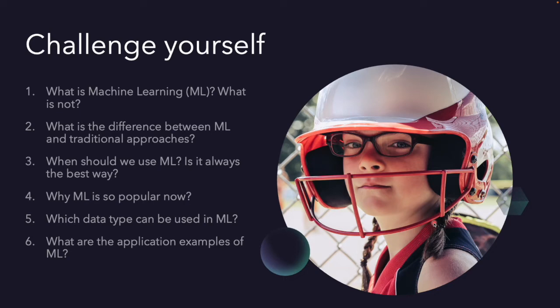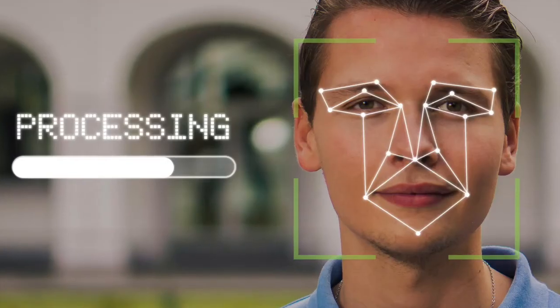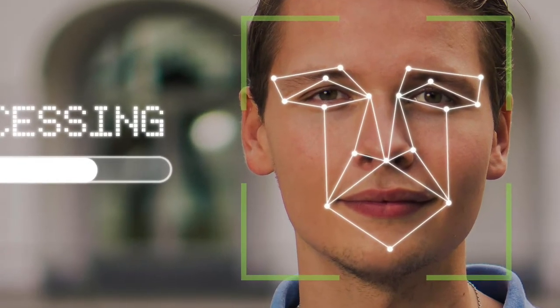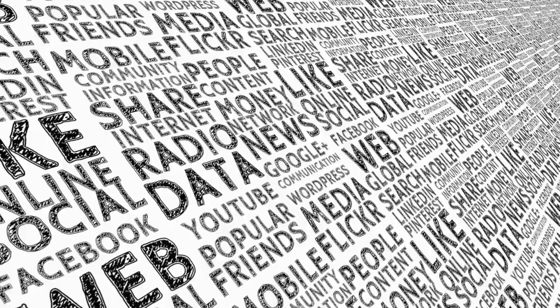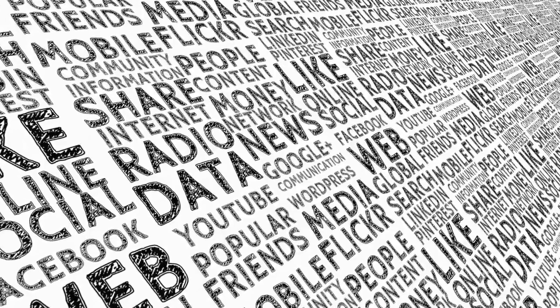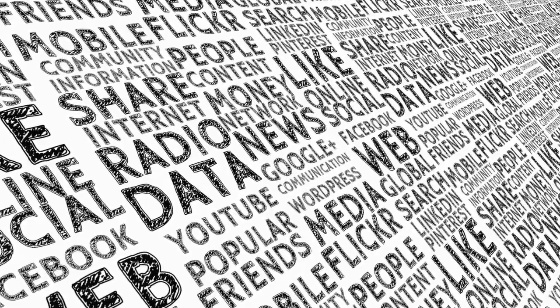For example, the first one: what is machine learning, and what is not? When should we use machine learning? Which data types can be used in machine learning — image, text, or all? Can you give an example for each data type?